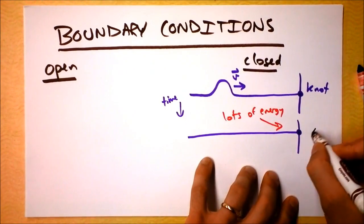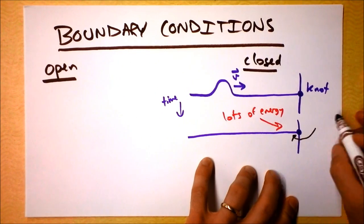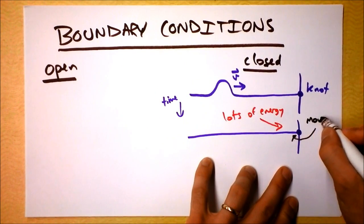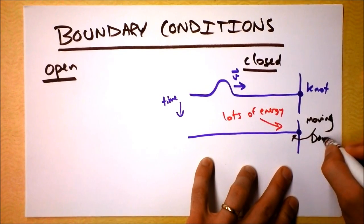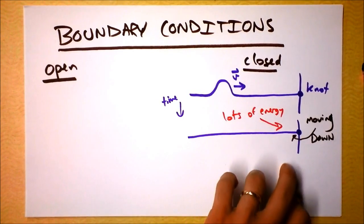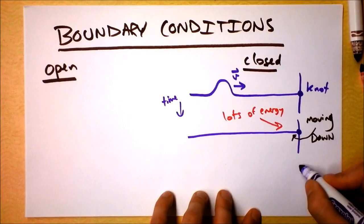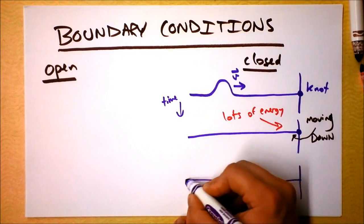You want to guess which way this section of rope is moving? Which way is it moving? Moving down. Cool. So that section of wave is moving down. And a moment later, as a result, a new wave emerges.